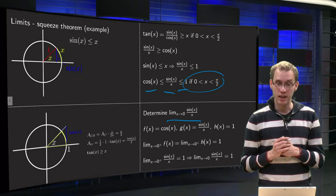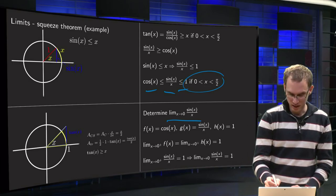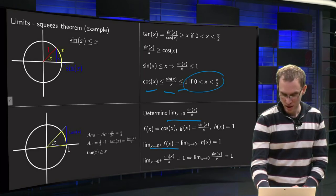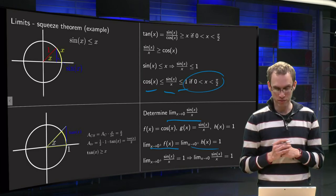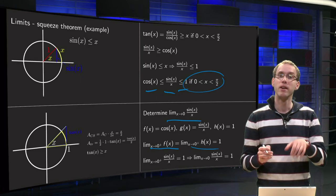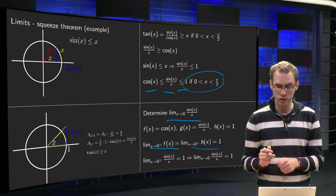Then we can take our limit. If we take the limit x to 0 of f of x and the limit x to 0 of h of x, well h is trivial because it is 1, the function 1, so the limit is just 1. Taking x to 0 and the cosine x also yields 1.